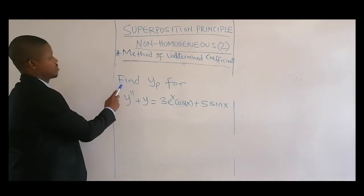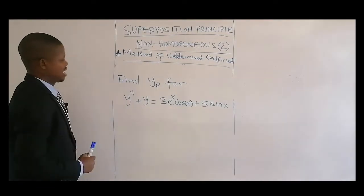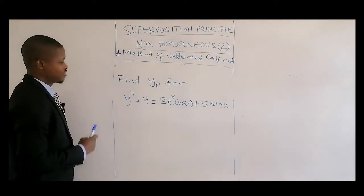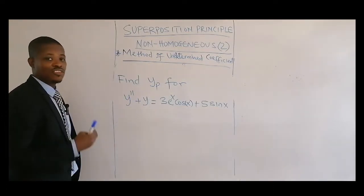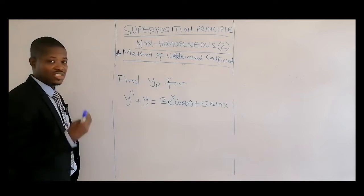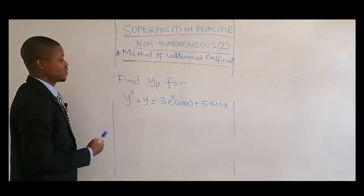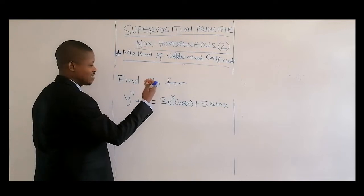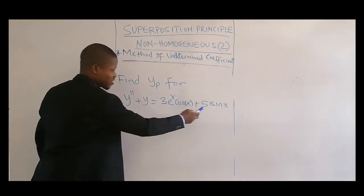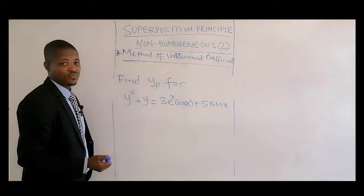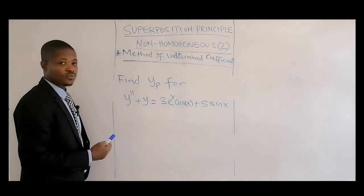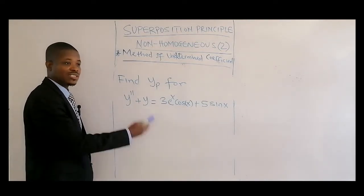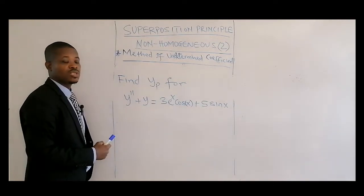We're looking at this question: find the particular solution for this equation. If we check this equation, this is the second order differential equation which is non-homogeneous. We have the right hand side with two different functions. So the first thing for us to do is get the homogeneous part of the equation.